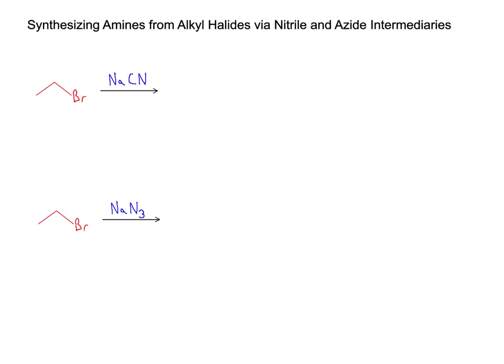So let's explore some other ways to make amines that are more efficient. We can still start with an alkyl halide; however, rather than doing a direct substitution, we're going to go through a nitrile or an azide intermediary. Both of these reactions start off as an SN2 reaction as well. The sodium ion is going to be a spectator ion, and what we really care about is the cyanide anion and the azide anion. Those can perform an SN2 reaction on the alkyl halide, creating the nitrile and the alkyl azide.